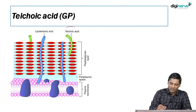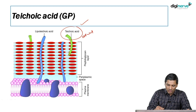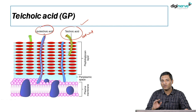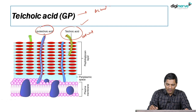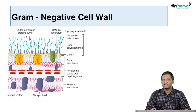Apart from that, the gram-positive cell wall also has teichoic acid, which is of two types: cell wall teichoic acid, which is attached to the peptidoglycan layer, and lipoteichoic acid, which is attached to the cell membrane. Teichoic acid is present in gram-positive organisms and is typically absent in gram-negative organisms. The function of teichoic acid is not clearly known, though it is believed it may help in adhesion.